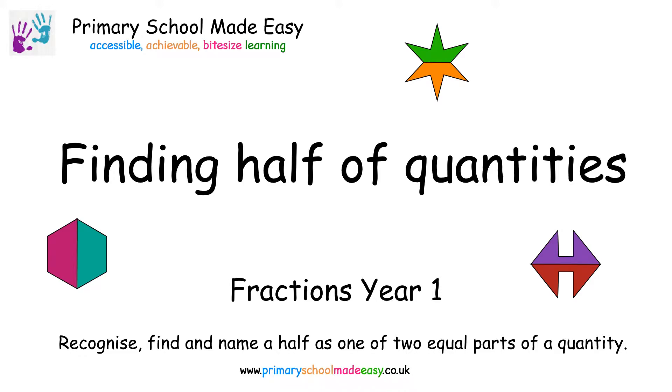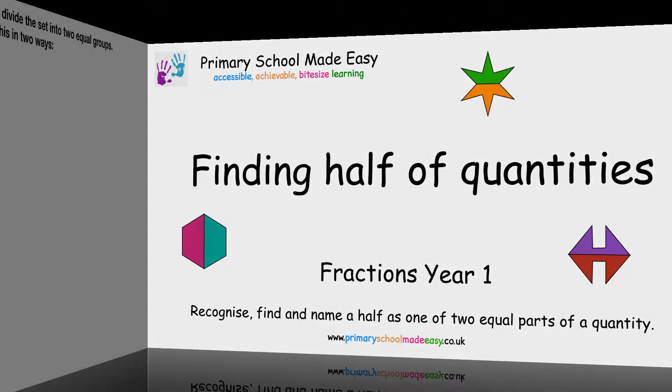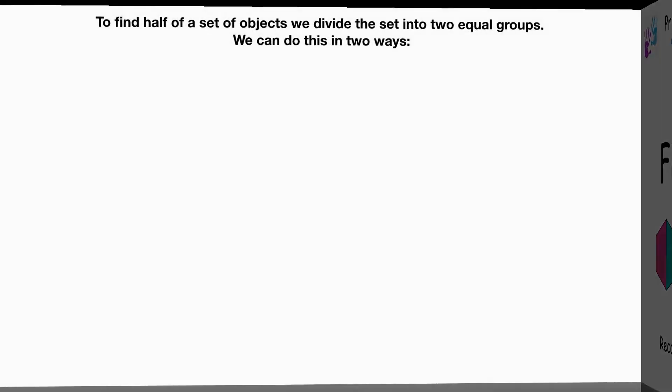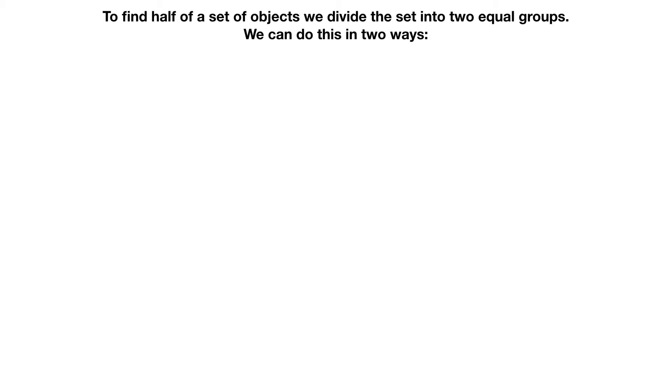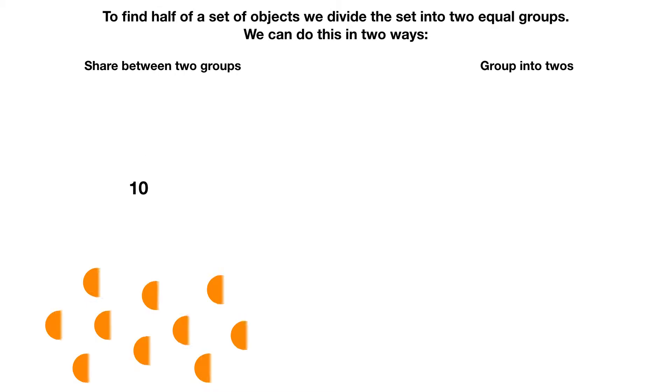Finding half of quantities. To find half of a set of objects, we divide the set into two equal groups. We can do it in two ways: sharing and grouping. Let's look at sharing first.